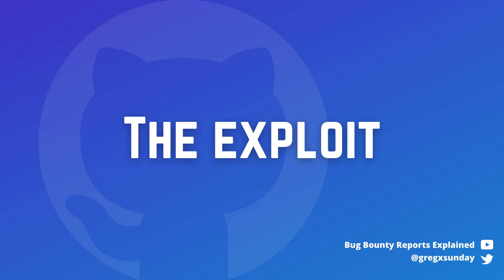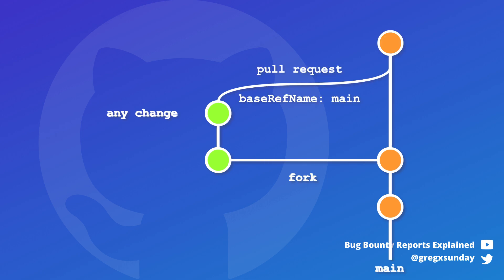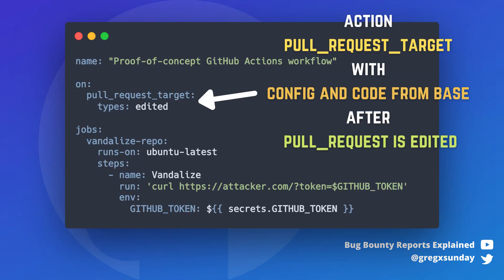Let's now connect all the dots together for an exploit. First, you fork the victim repository — you copy it to your GitHub account. Then you make some changes that are completely irrelevant at the moment. Then you create a pull request to the victim repository to the main branch. This triggers the pull request action that runs your code, but without access to secrets. Next, coming back to your forked repository, you create a malicious commit. You create a workflow that steals the GitHub API token and sends it to your server. This workflow is triggered by the pull request target action.